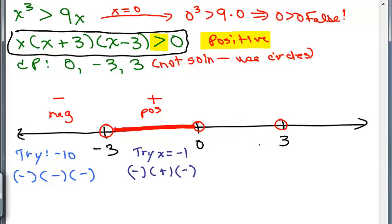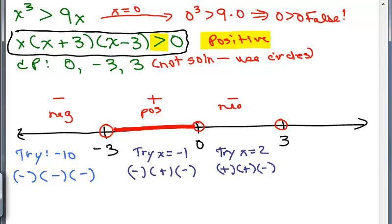Testing x equals 2 (between 0 and 3): x is positive, (2 plus 3) is positive, (2 minus 3) is negative — positive times positive times negative is negative. That's not a solution because we're looking for values that make this inequality positive.